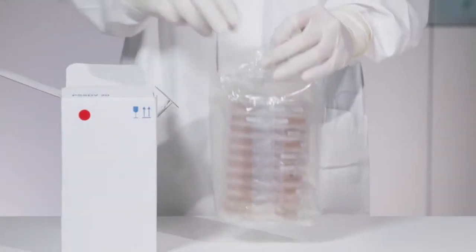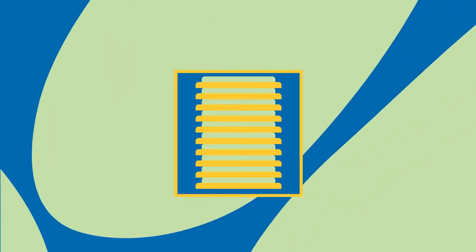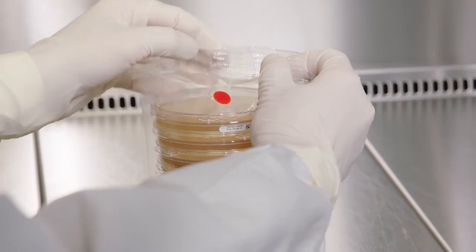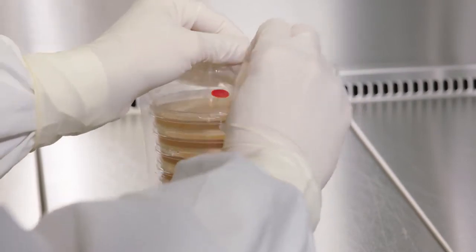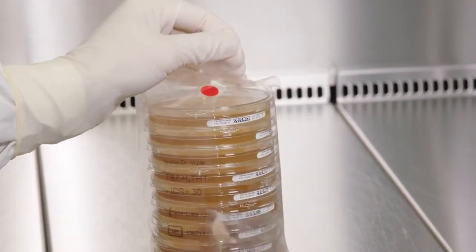Triple bagged ICR Plus contact and settle plates allow a safe and sterile transfer into clean rooms by removing one bag per material lock. For use in isolators, the innermost bag can be hung up during decontamination by using the hole.